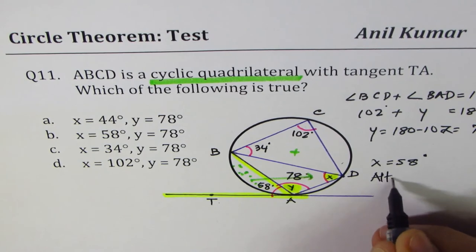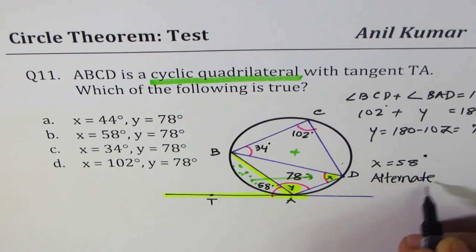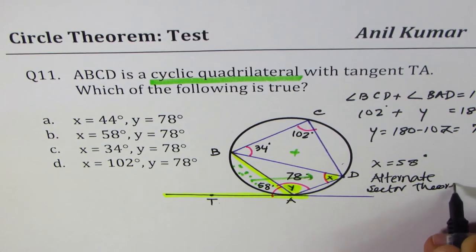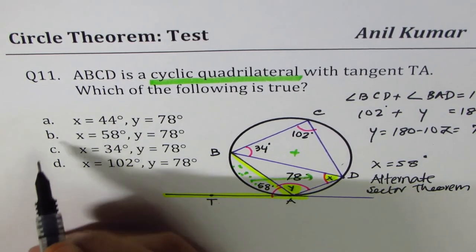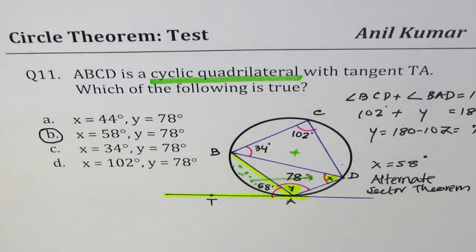So we have this from alternate sector theorem. So X is 58. X is 58 for B. That is the right choice.